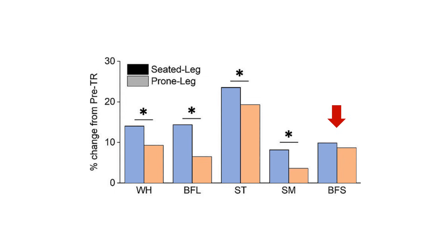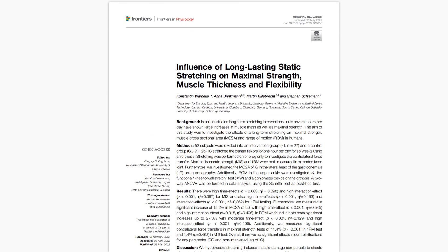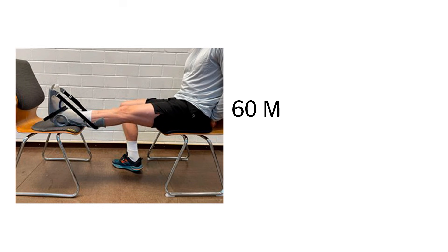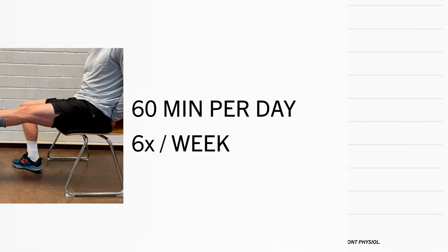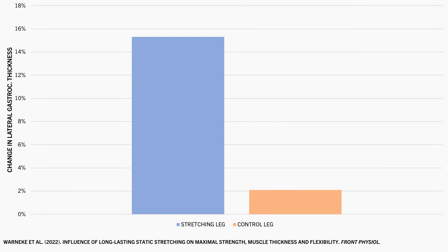Furthermore, there is some evidence indicating that stretching alone may be somewhat hypertrophic. For example, one study explored the effects of static stretching on muscle hypertrophy. Subjects had one of their ankles held in a dorsiflexed position with an orthosis for 60 minutes per day for 6 weeks. It was found that the gastrocnemius saw around a 15% increase in muscle thickness in the calf being stretched. This evidence suggests that stretch seems to play somewhat of a role in muscle growth, possibly by increasing mechanical tension.